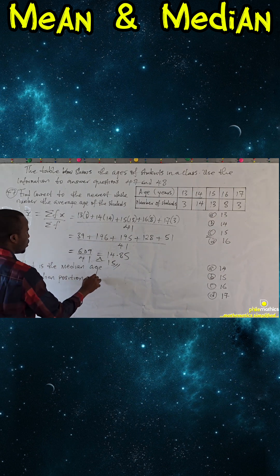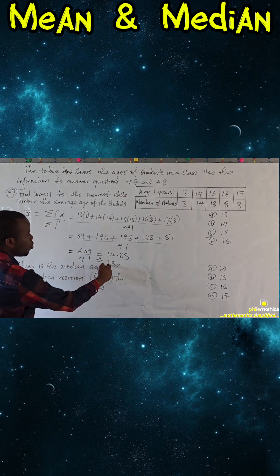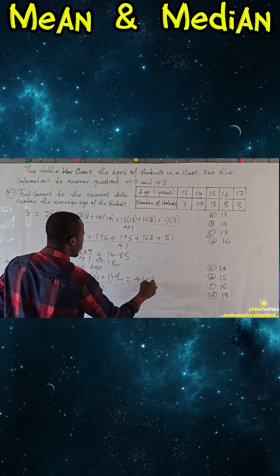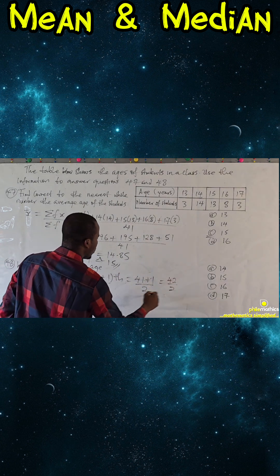What's our n? The number of frequency: 41. So this is 41 plus 1 over 2. This is 42 over 2, and so this is the 20th position.